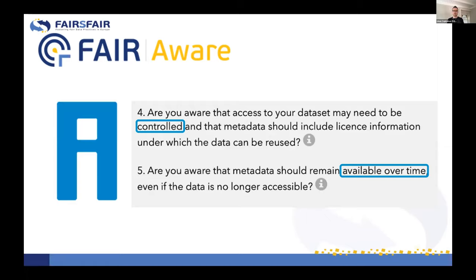Looking at the second principle — accessibility — question four highlights that a dataset ideally should be accessible. In cases of legitimate reasons such as privacy protection or legal constraints, more restricted access levels can be chosen, assuring the data is 'as open as possible and as closed as necessary.'